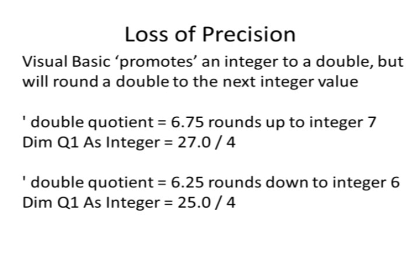There are certain cases where we may lose some precision. For example, Visual Basic promotes an integer to a double, but will round a double to the next integer value.